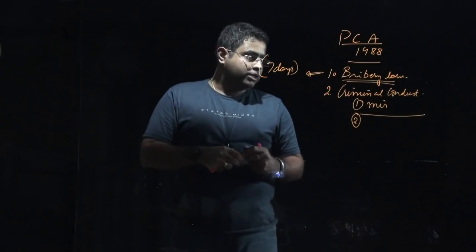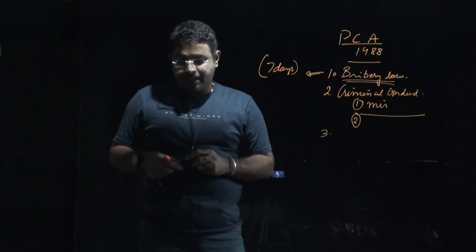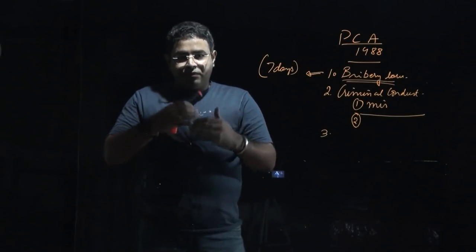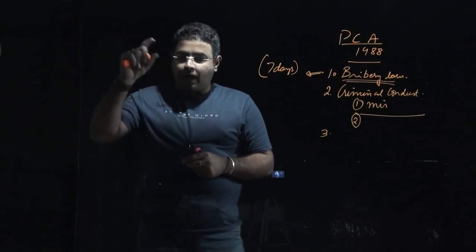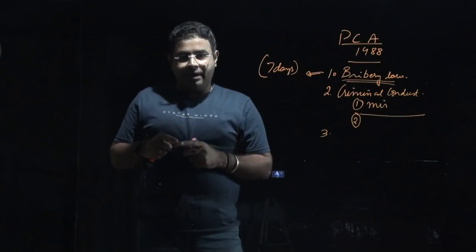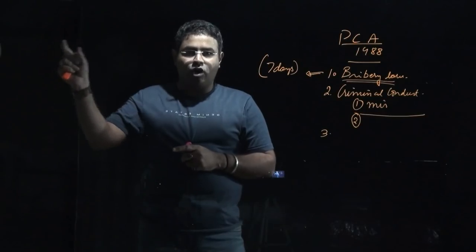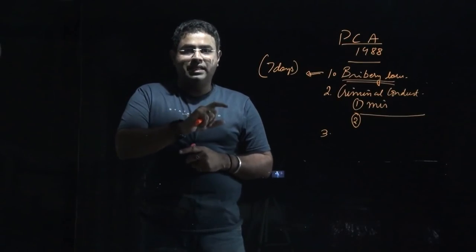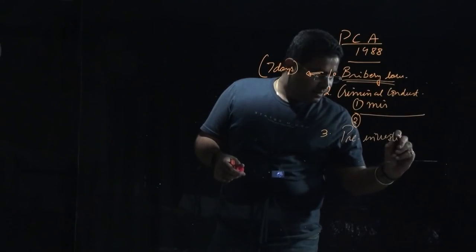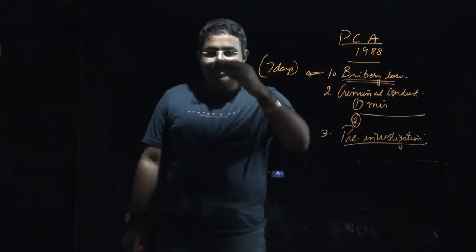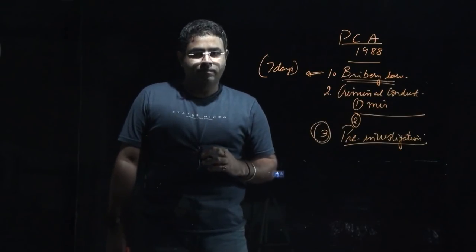The third very important change introduced is with respect to pre-investigation. Earlier, if someone indulged in corruption, the police would conduct investigation directly. But from now onwards, after the enactment of this amendment to the Prevention of Corruption Act 1988, the police will have to seek permission from the relevant authority before conducting pre-investigation. This is a retrograde step — it makes investigation against those indulging in corruption more difficult.